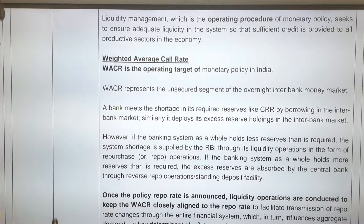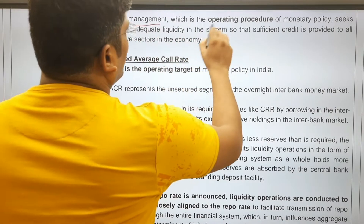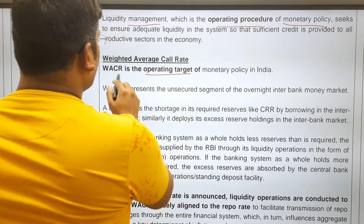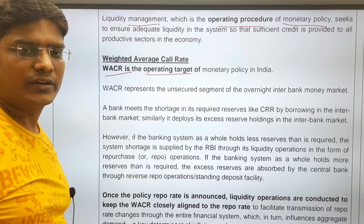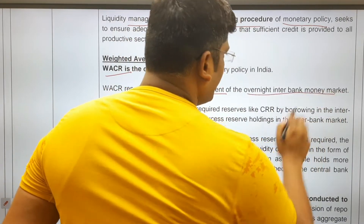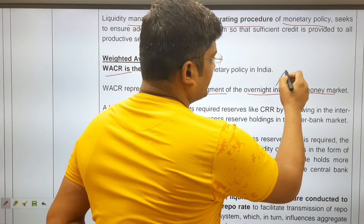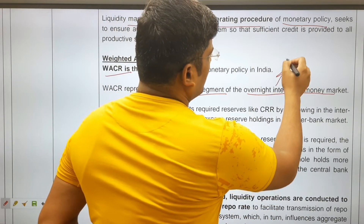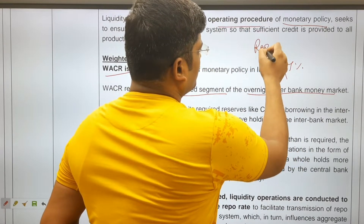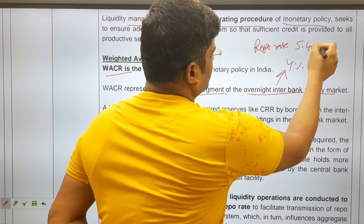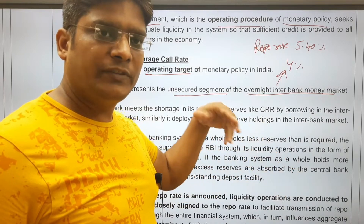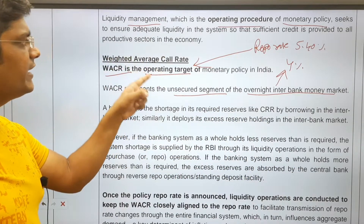The operating target of monetary policy is the Weighted Average Call Rate (WACR). WACR represents the unsecured segment of the overnight interbank money market — the market where banks borrow from each other. Once the policy repo rate is announced, RBI conducts liquidity operations to keep the WACR closely aligned with the repo rate.